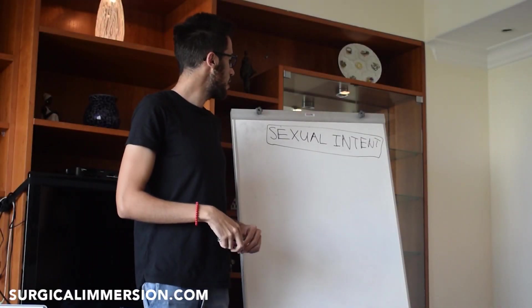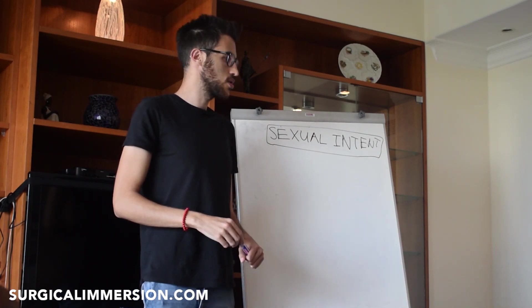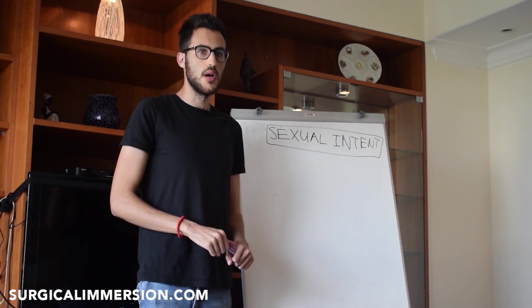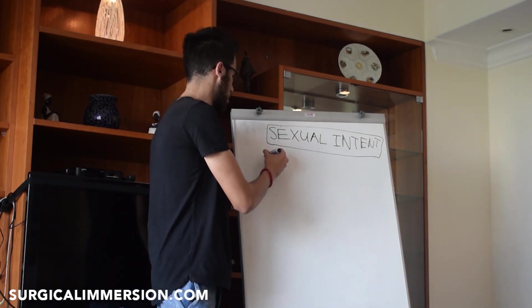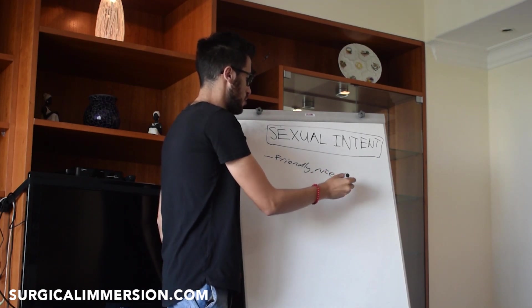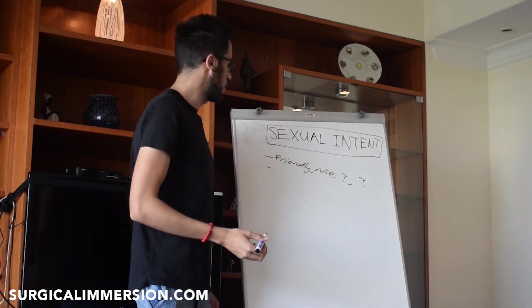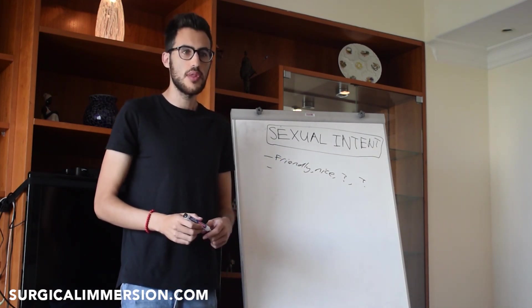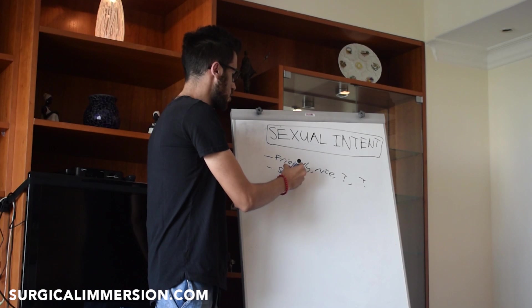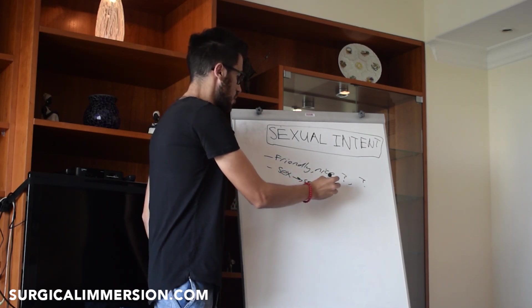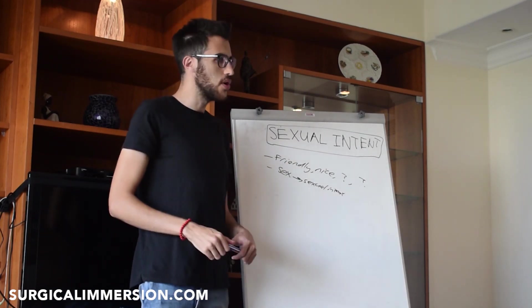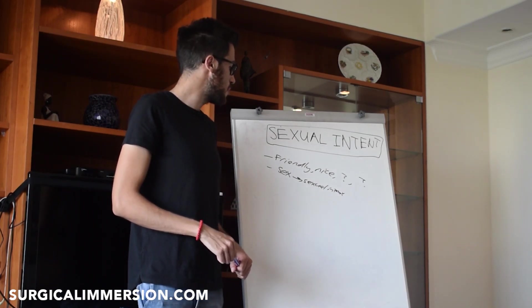Sexual intent is communicating your sexual interest in a girl. If you're not demonstrating that, you risk coming across as too friendly, too nice — she doesn't know what you want, why you're there. You might be thinking you want to sleep with her, but she thinks it's just a friendly conversation. You can be with a girl for a year, just chilling, hoping she'll want to sleep with you.